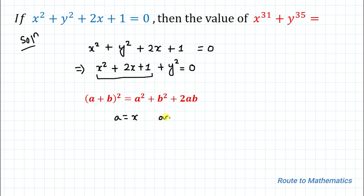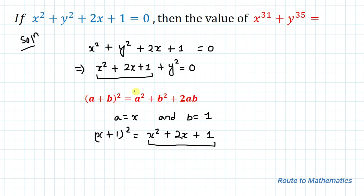We apply this identity by taking a = x and b = 1. So we get (x + 1)² = x² + 2x + 1, which is exactly the terms present in our equation. So we replace x² + 2x + 1 with (x + 1)², giving us (x + 1)² + y² = 0.